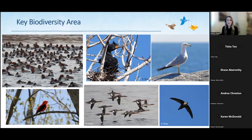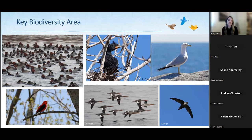Tommy Thompson Park is an environmentally significant area and a key biodiversity area. In 2000 it was declared a globally significant Important Bird Area by BirdLife International, for its significant breeding colonial waterbirds like double-crested cormorants, nationally significant waterfowl during migration and overwintering, and large concentrations of songbirds during spring and fall migration. In 2022 it was redesignated as a Key Biodiversity Area, also recognizing high concentrations of red-breasted mergansers, ring-billed gulls, and chimney swifts.